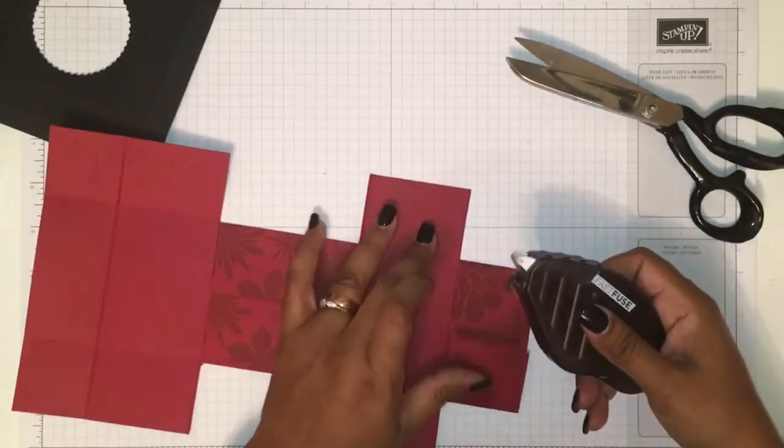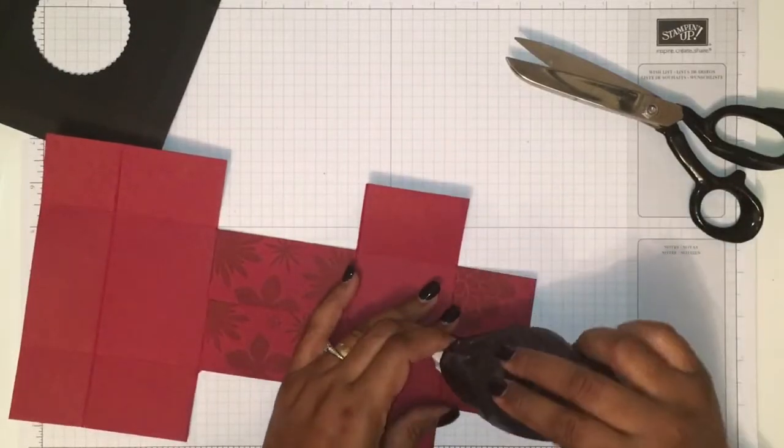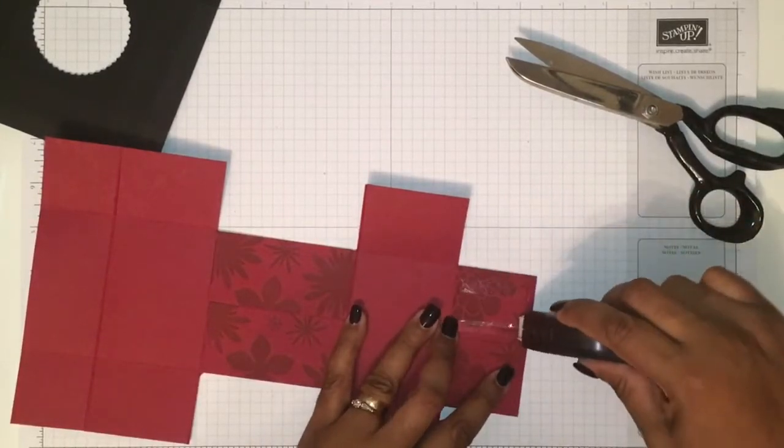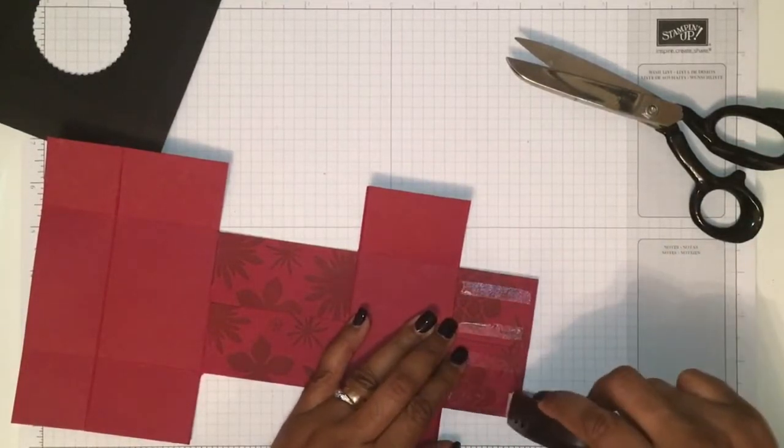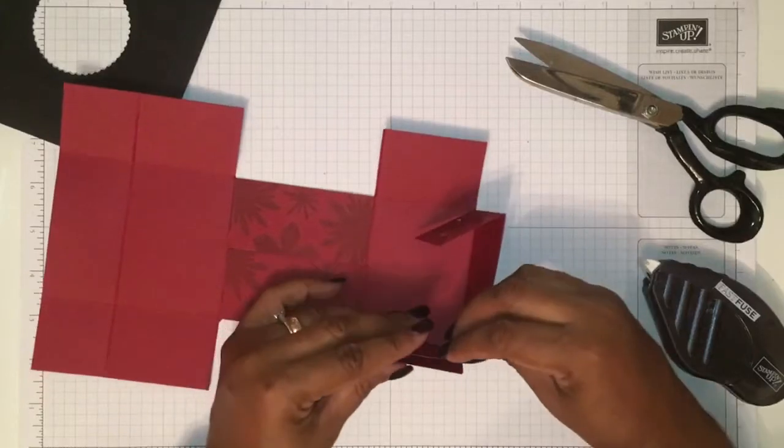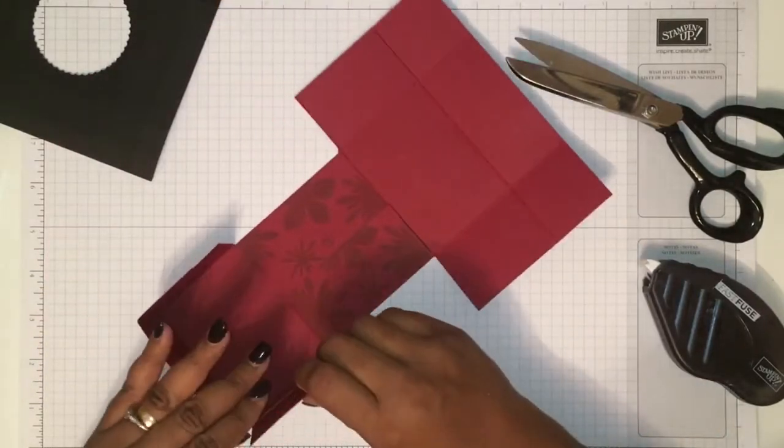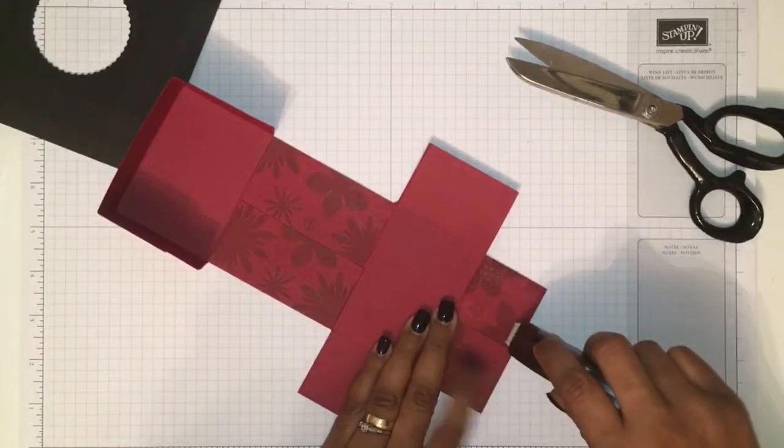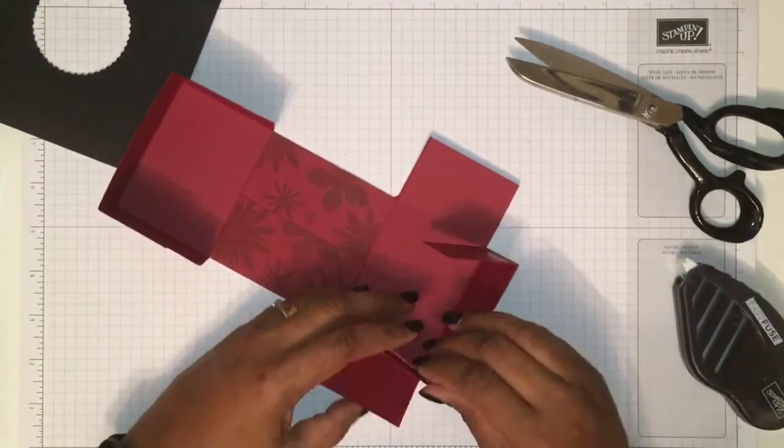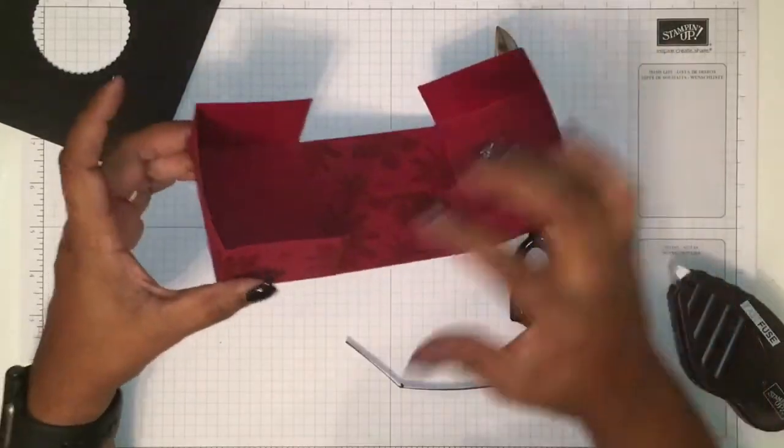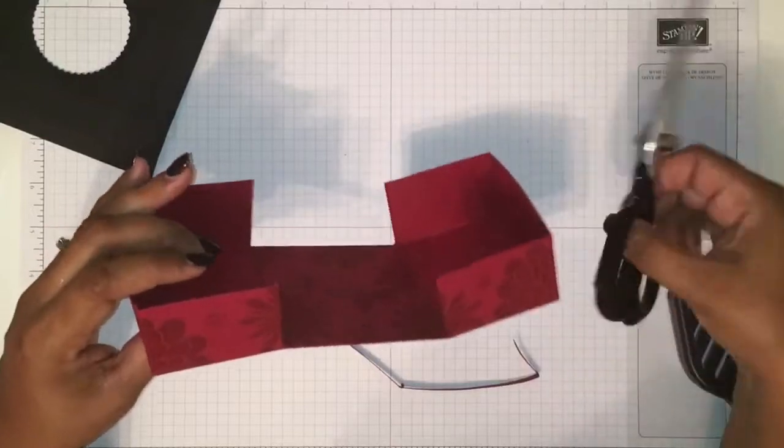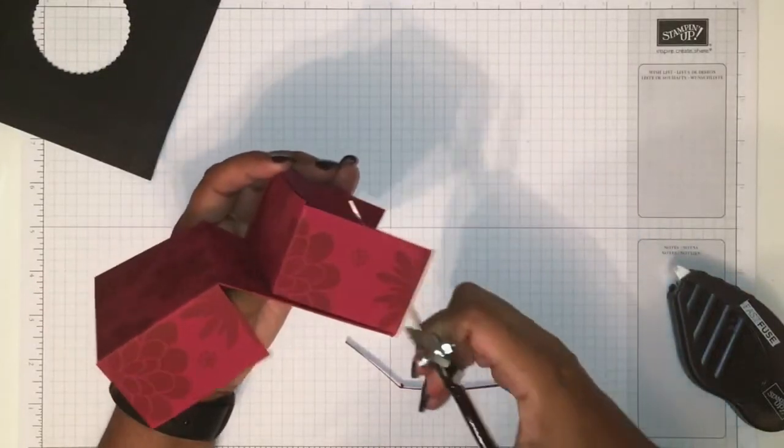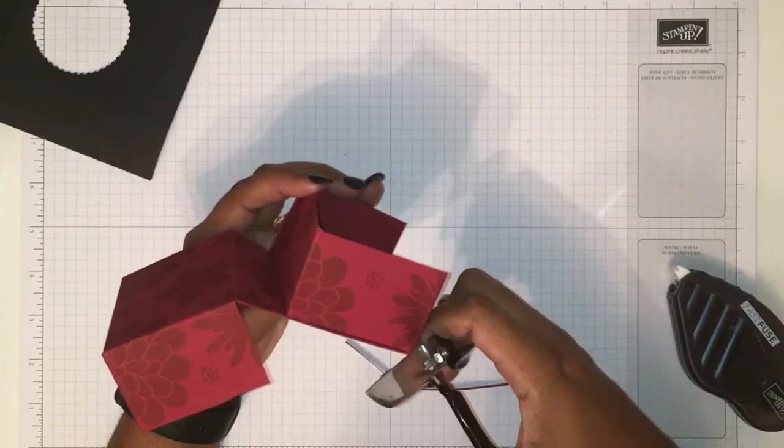Now we are going to put some glue on these tabs and glue inside to make the edge that closes this. So let's just get the glue here and we are going to repeat this on the other side as well.